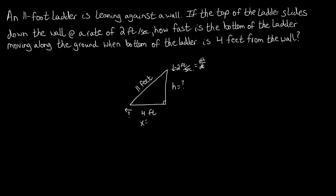Similarly, the value we're trying to find is dx/dt — the change in x with respect to time. As the ladder continues to slide down the wall, the bottom of the ladder slides across the ground, getting farther from the wall. We should expect a positive answer for dx/dt, since the distance from the base of the ladder to the wall is going to keep increasing.